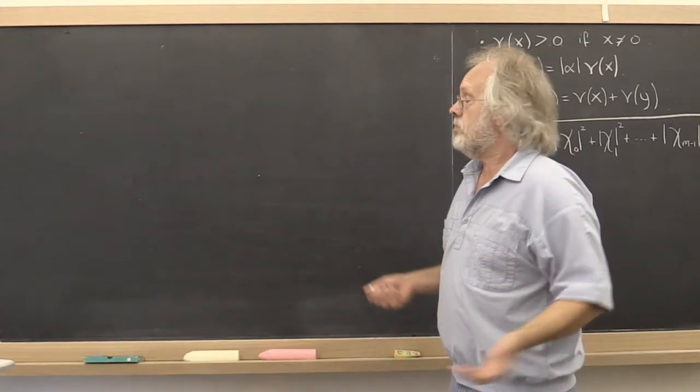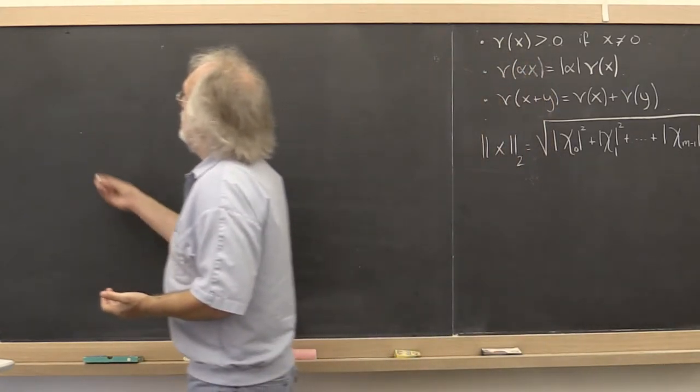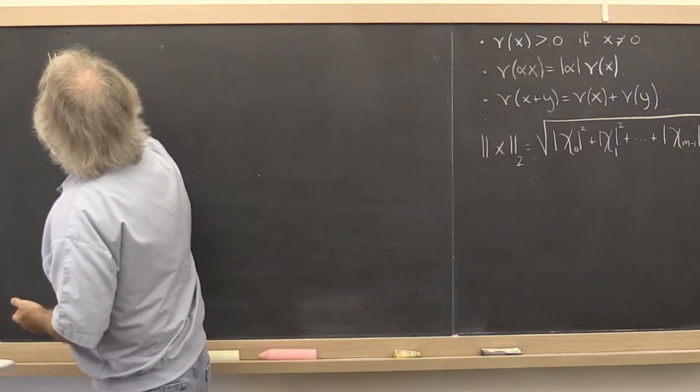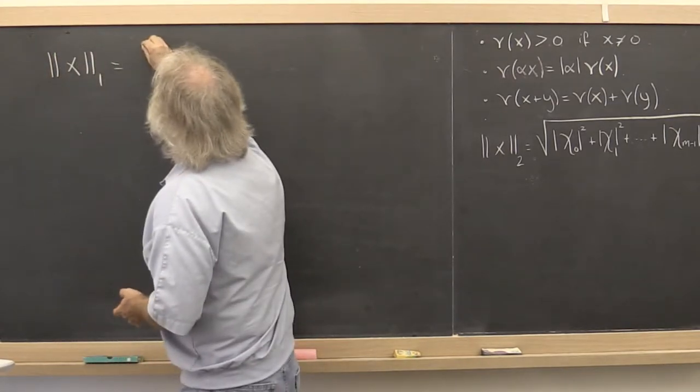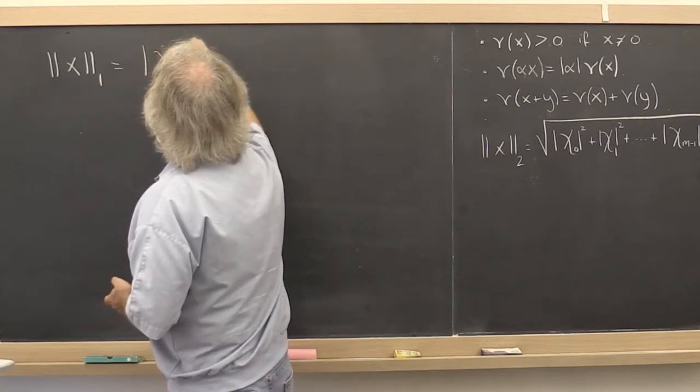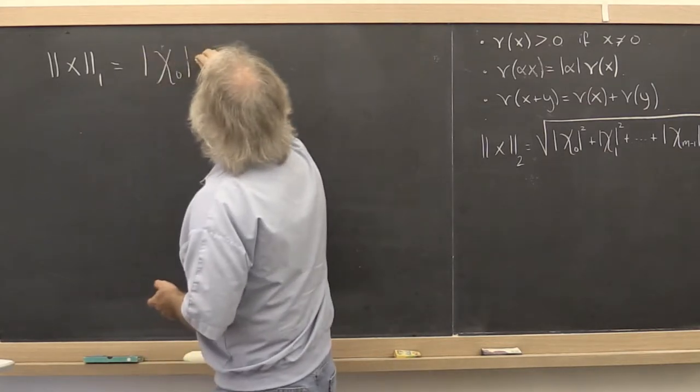So another norm that we are going to encounter is the 1-norm. And that's written as follows. And it's simply the absolute value of the components of the vector.